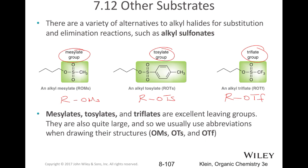Mesylates, tosylates, and triflates are all really good leaving groups. They're also quite large, so we use abbreviations when drawing their structures. You don't have to necessarily draw these out unless you're drawing a mechanism, but you should be familiar with their structures and with the abbreviations.